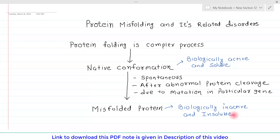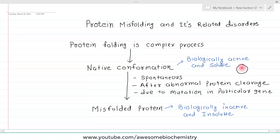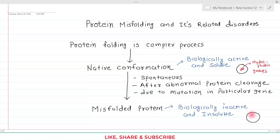The reason native conformation is soluble is that in the native conformation of the protein, the hydrophobic groups are buried deep inside, so on the surface there are only hydrophilic molecules which can better interact with the watery surrounding environment. Whereas in case of misfolded protein, the hydrophobic residues are on the surface and cannot interact with the watery surroundings, so that's why they are insoluble.